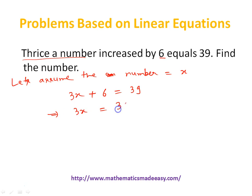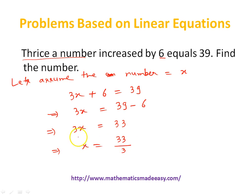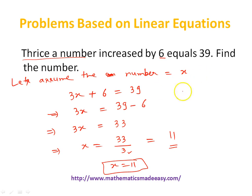So 3x equals 39 minus 6, which is 33. So x equals 33 divided by 3, because 3 is in multiplication on the left-hand side, so it goes as a divisor on the right-hand side. 33 divided by 3 is 11. So x equals 11, and the number we are looking for is 11.